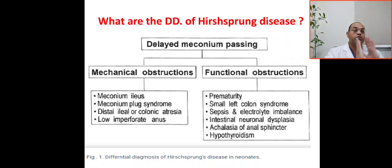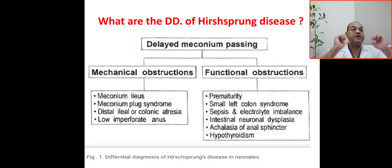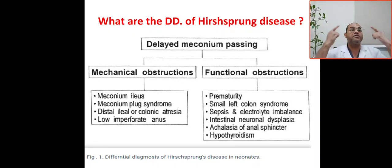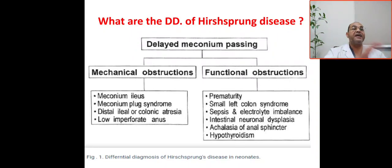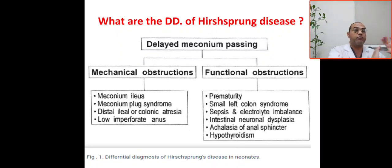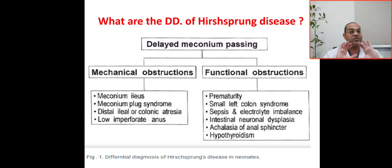The second category is functional obstruction. Functional obstruction depends on gestational age, antenatal disease, the clinical situation of the baby — whether septic or non-septic — and biochemical assessment, specifically whether there is any electrolyte disturbance such as hypokalemia.